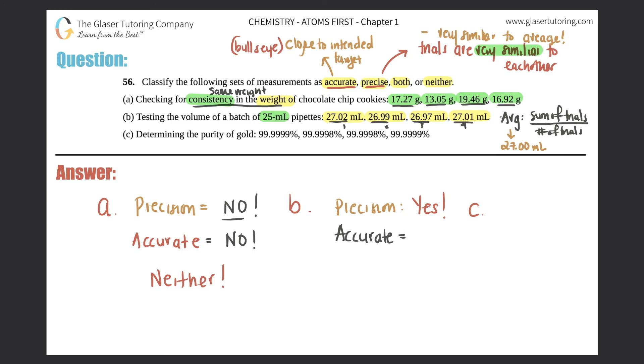But now let's see if it's accurate. What was the intended number? The intended number was a batch of 25 mL pipettes. But look at what this is: 27, basically 27, 26.99, another 26.97, 27.